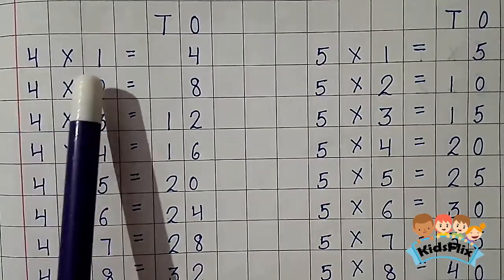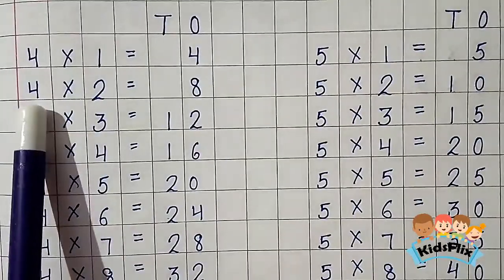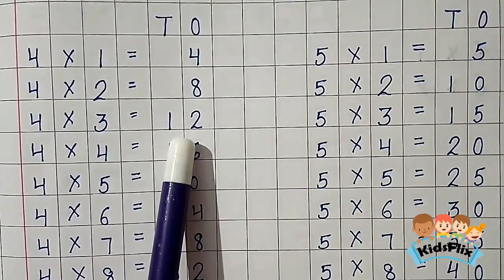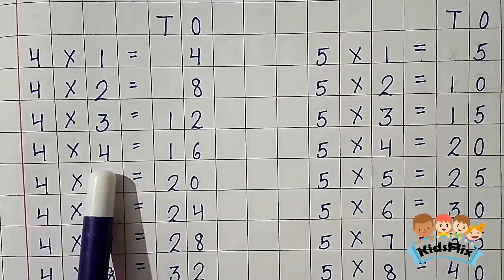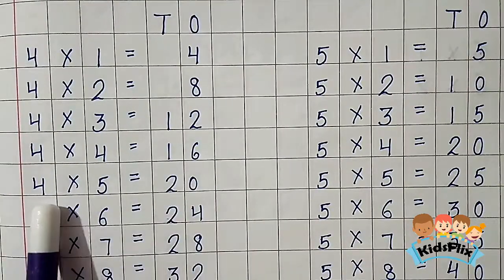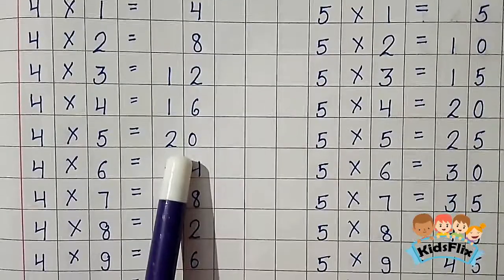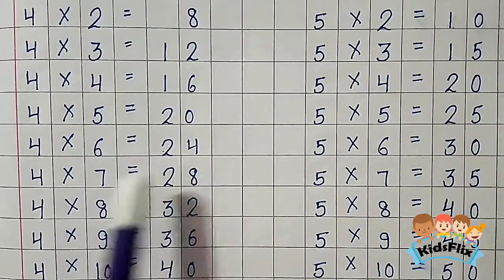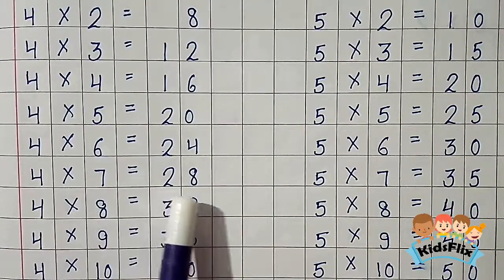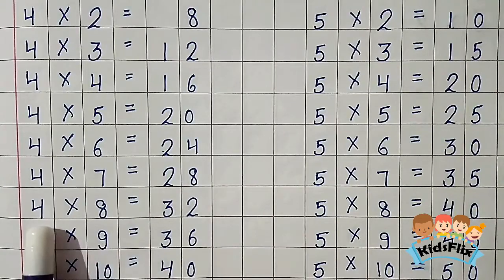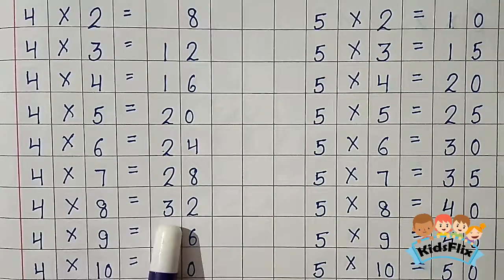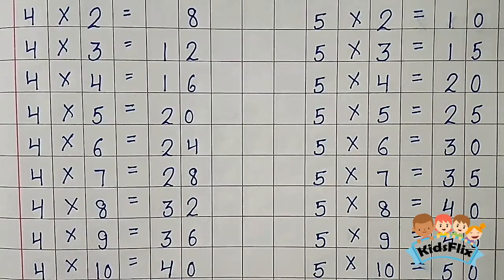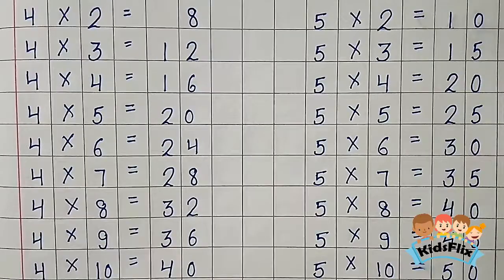4 1s are 4. 4 2s are 8. 4 3s are 12. 4 4s are 16. 4 5s are 20. 4 6s are 24. 4 7s are 28. 4 8s are 32. 4 9s are 36. 4 10s are 40.